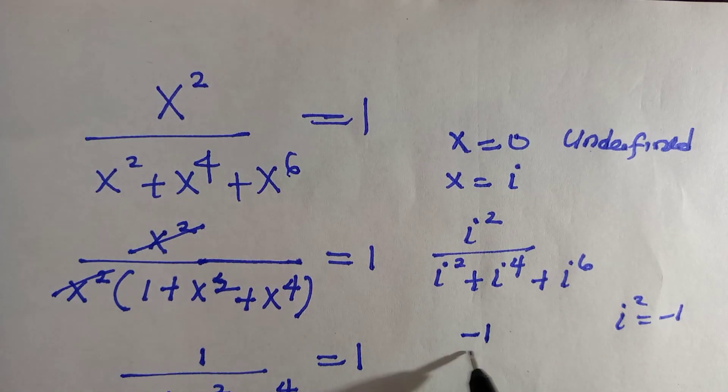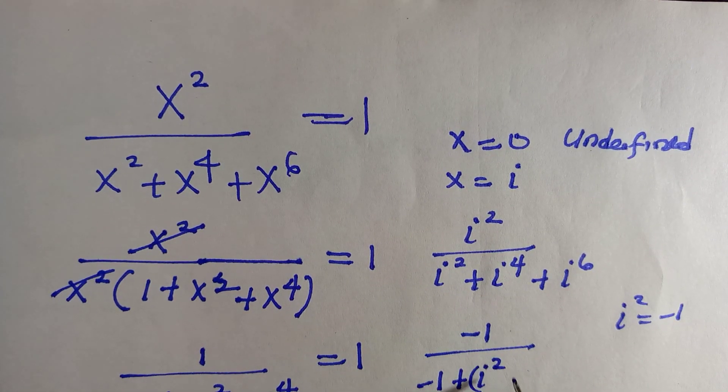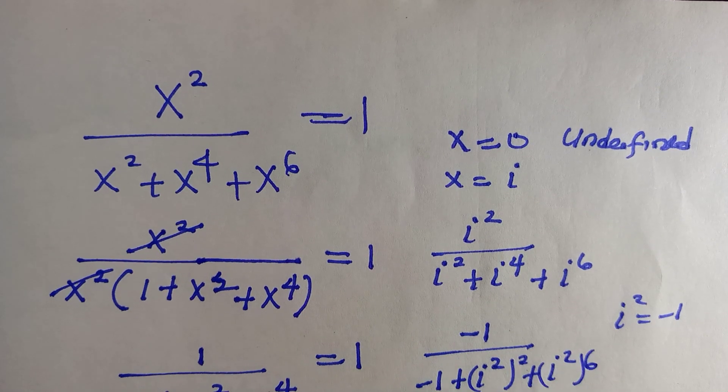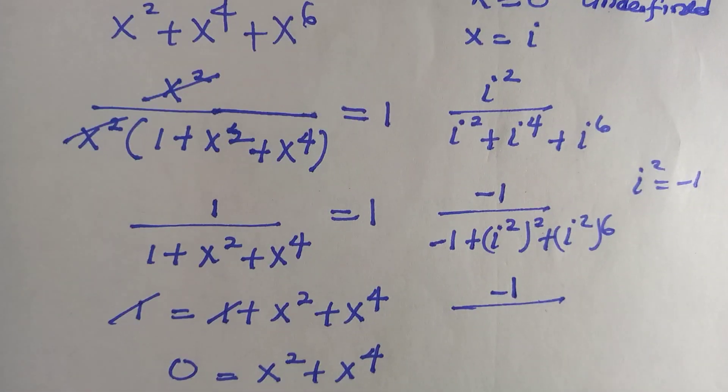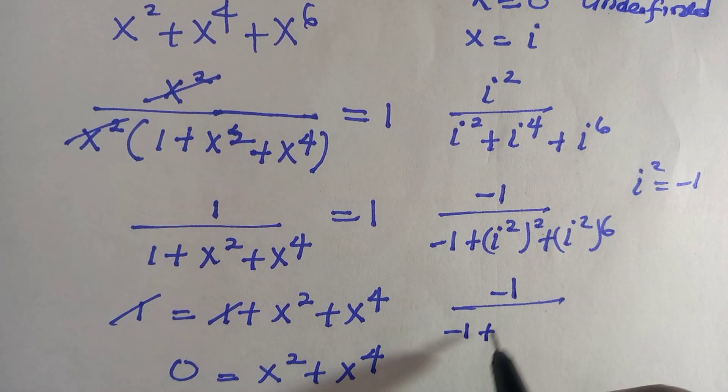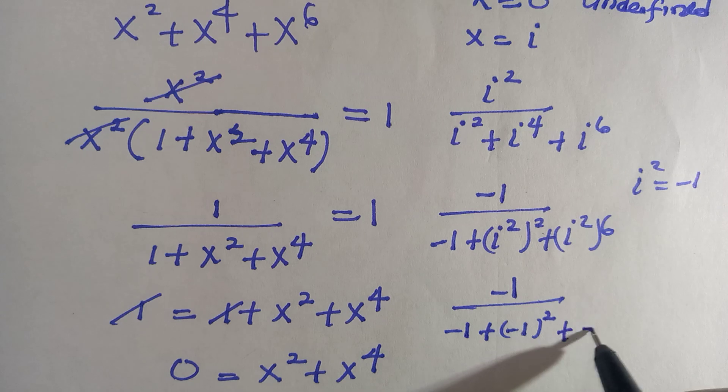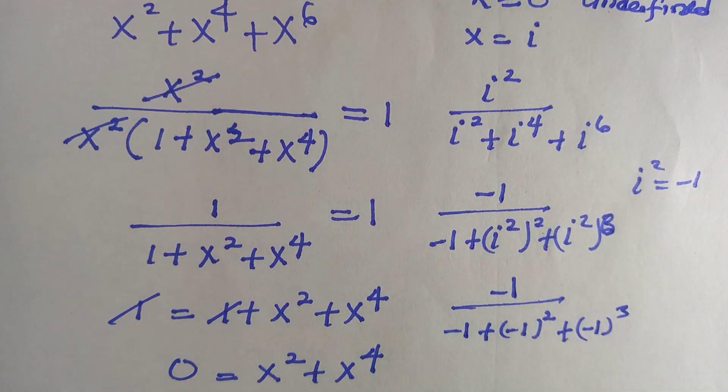And by applying it here, we have negative 1 divided by negative 1 plus—so, this one can also be written as i squared squared, plus i raised to the power of 2 raised to the power of 3. So we have negative 1, and here we have negative 1, plus, and here is negative 1 raised to the power of 3.